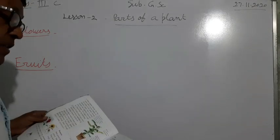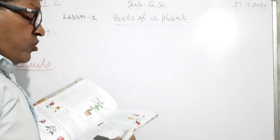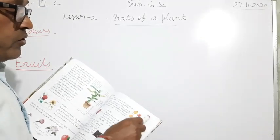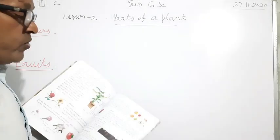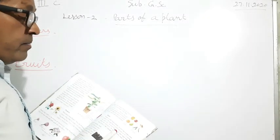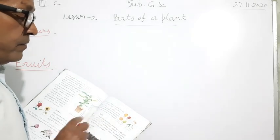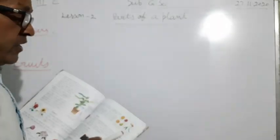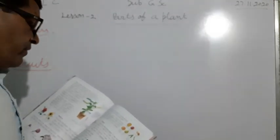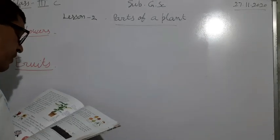Now next, after the fruits. Some examples of fruits are given in your book. If you see page number 13, some pictures of fleshy fruits and dry fruits are given here. Now next, seeds.